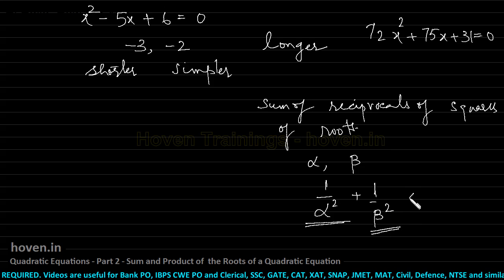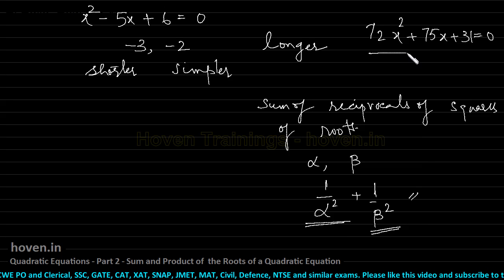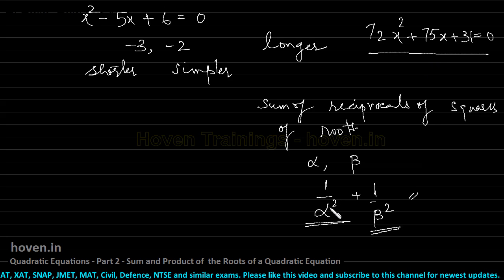Now this sum can be calculated by a shortcut method. But if you have to go for a longer method, then you will have to first of all calculate, solve this equation, find out alpha and beta and then put them in this and then calculate. That's going to waste a lot of time.